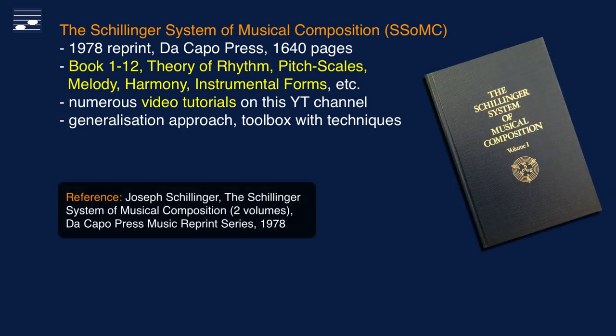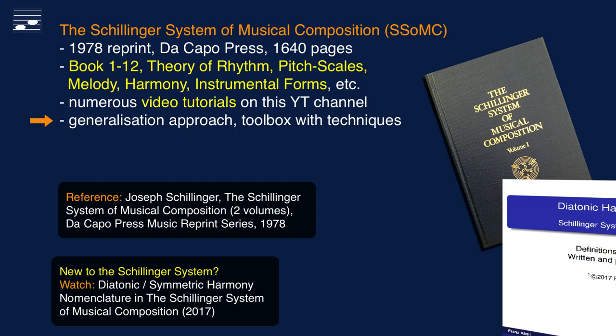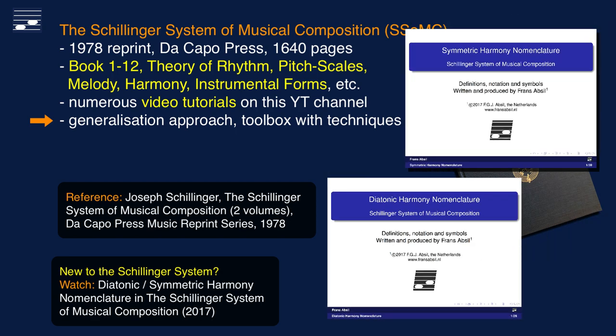I'm a regular user of the Schillinger system of musical composition, a system for writing music that is now almost a century old, available as a reprint two-volume book set. In more than 1500 pages you'll find 12 books called The Theory of Rhythm, Scales, Melody, Harmony, etc. I published many practical tutorials on techniques from this system. I still find it's a great toolbox for writing functional music when you're not in a position to wait for inspiration and have to meet strict deadlines.